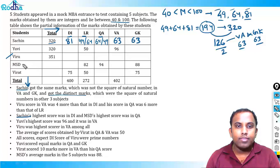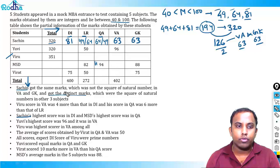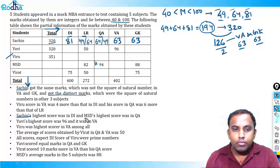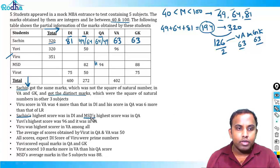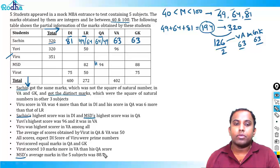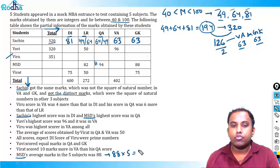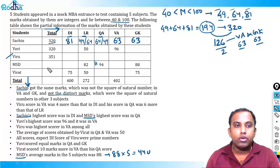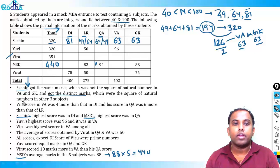MSD's highest score was in QA at 94 — no other score exceeds 94. Collecting MSD's conditions: MSD's average marks across five subjects was 88, so MSD's total is 88 × 5 = 440.